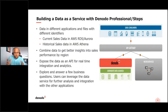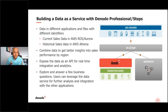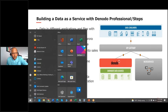I have my instance of Donato Professional up and running, but first let's talk about step number one — the business scenario. My data is in different applications and different files. In this case I have my current sales data in RDS Aurora and the historical sales data in AWS Athena. What I'm going to do is combine that sales data to build a dashboard that can then be leveraged for further analytics and expose that data to different lines of business — LOBs — that can then further integrate that using the API we expose.